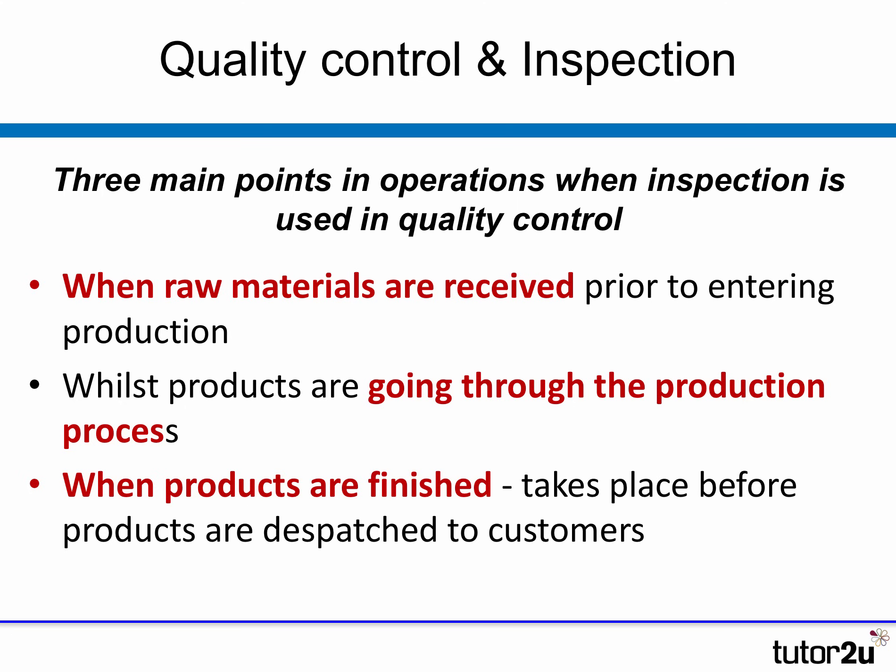There are three main points in the operation when inspection is carried out. Firstly, when the inputs into the production process are received — for example, checking the quality of raw materials as they arrive. Imagine a restaurant: you check the quality of the ingredients received in the kitchen each day, perhaps on a sample basis every day, every other day, or once a month.